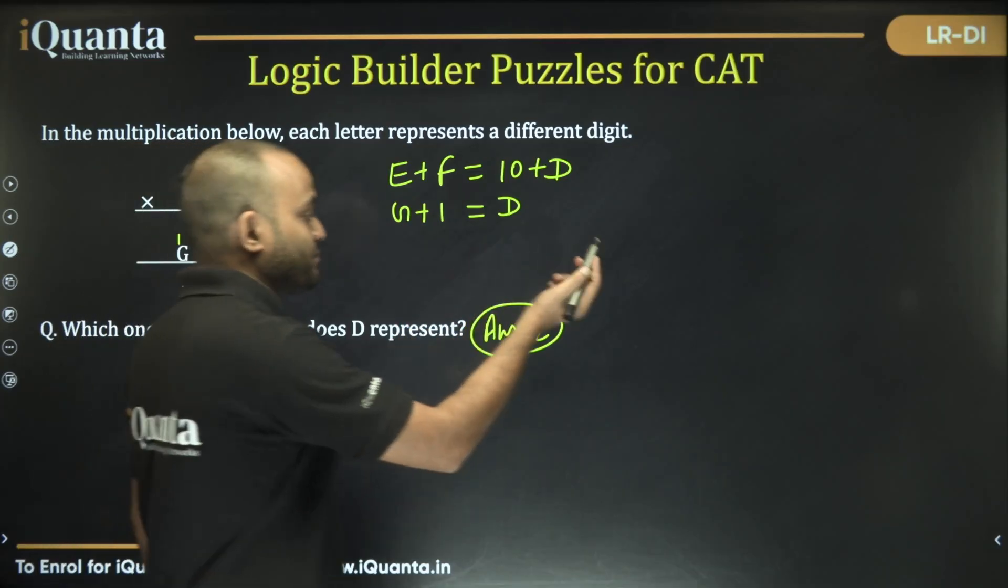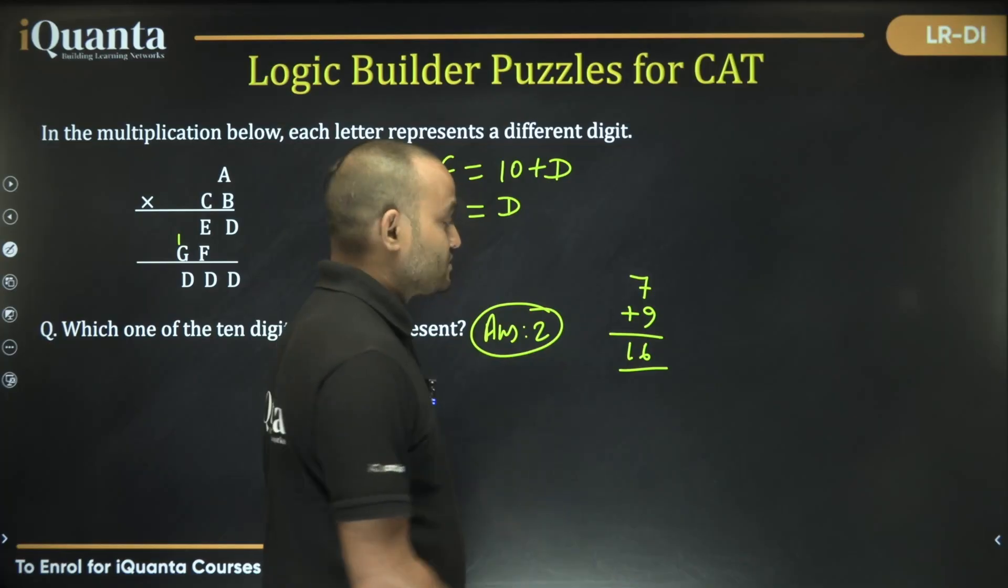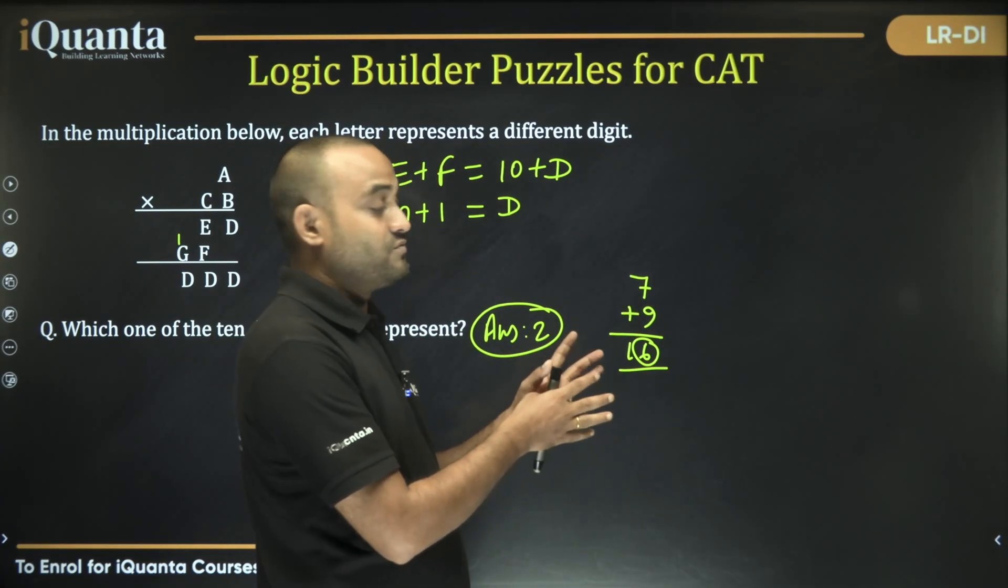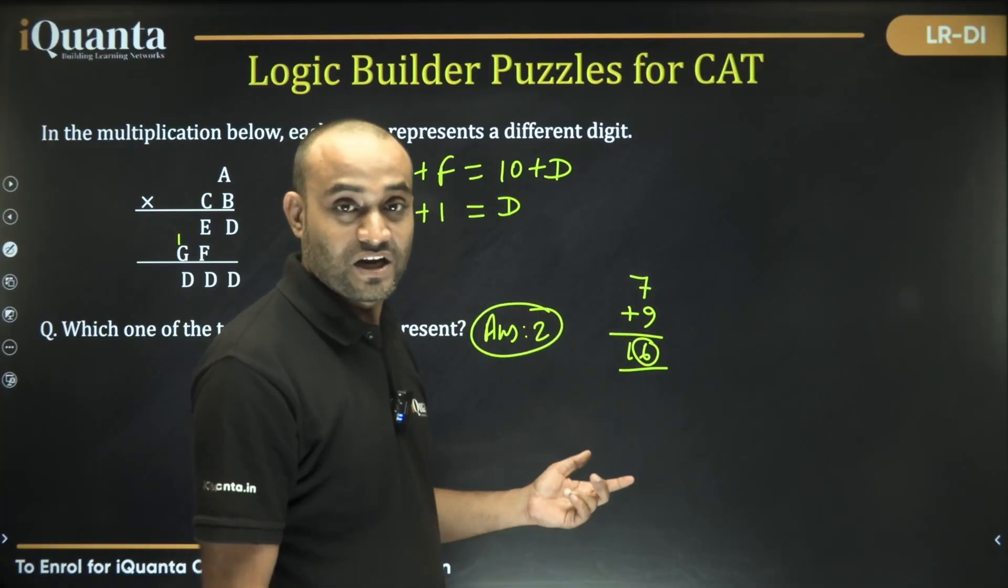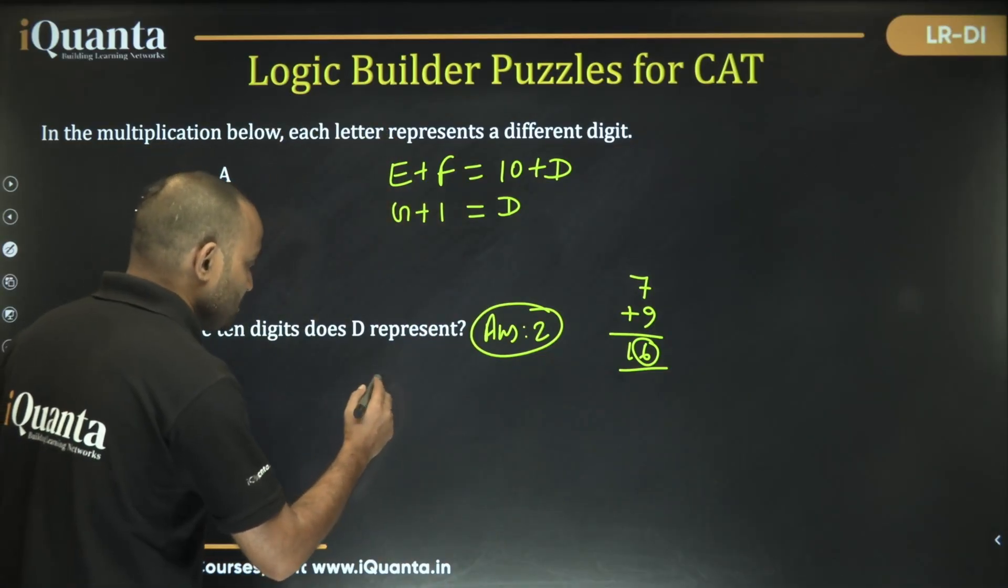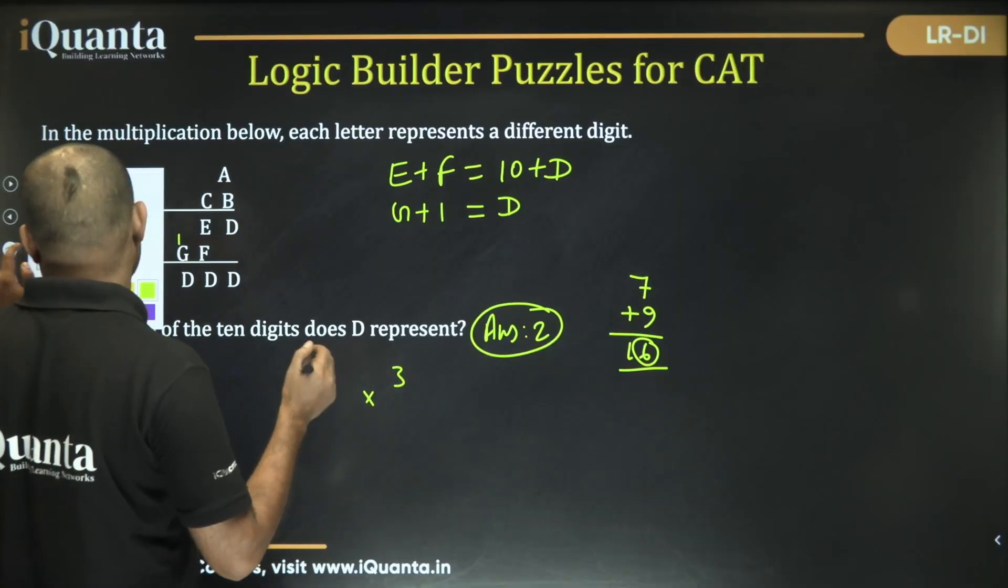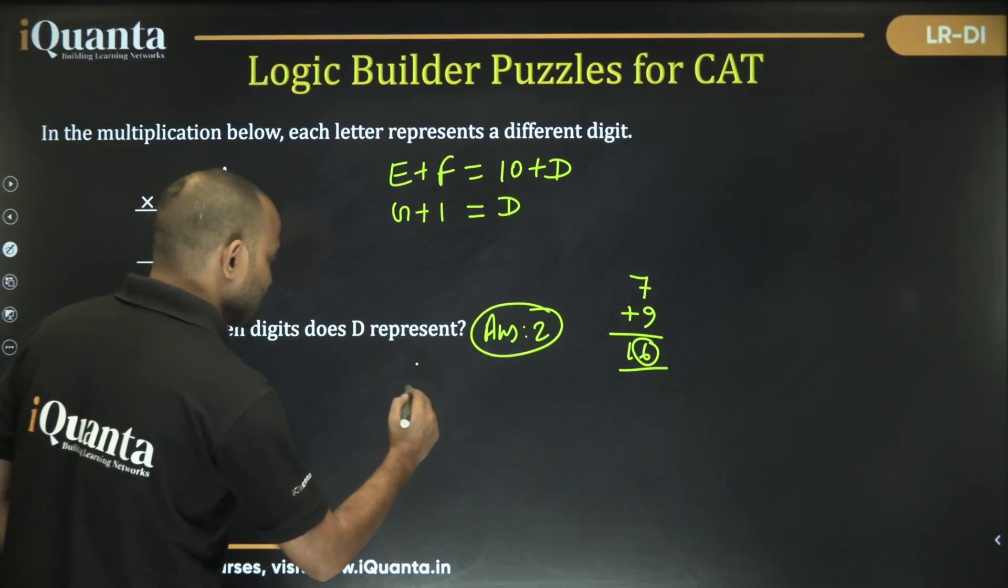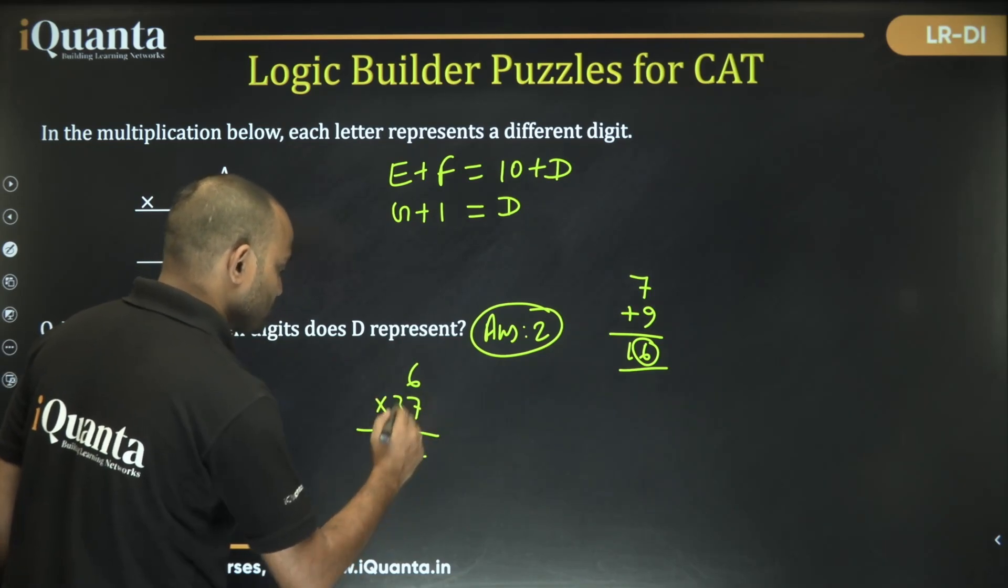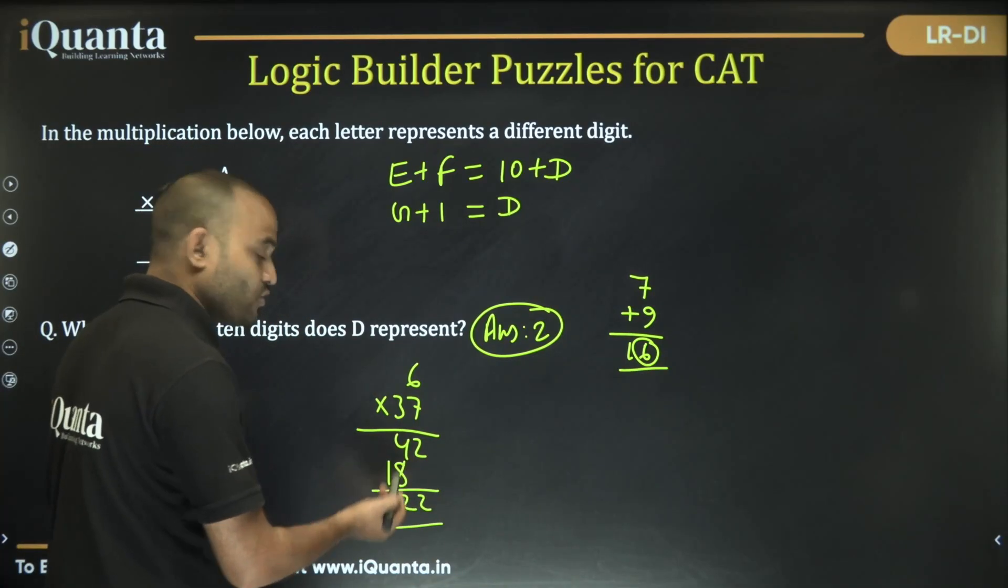So we can also say from here that E plus F is equal to 10 plus D, as well as we can say G plus 1 is equal to D. For example, 7 plus 9 is equal to 16. So 7 plus 9 is equal to 16, we are taking 6 and 10 is left which will carry forward as 1 to the left, and then that is being added. What was the result here? So we got A into—it was 3 into 6 into 37, it was 6 into 37. So 42 and 18, and then 222. This is what's happening here that 8 plus 4 is 12.